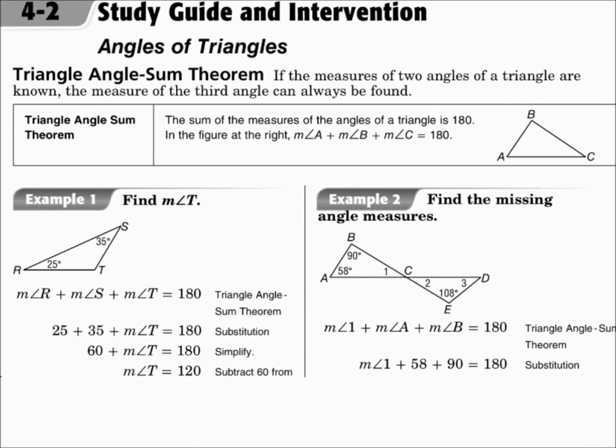This is lesson 4.2, Angles of Triangles. The objectives are to apply the triangle angle sum theorem and to apply the exterior angle theorem. The triangle angle sum theorem simply says that the three angles of a triangle add up to 180. So if you know two angles of a triangle, subtract those from 180 to get the third angle.